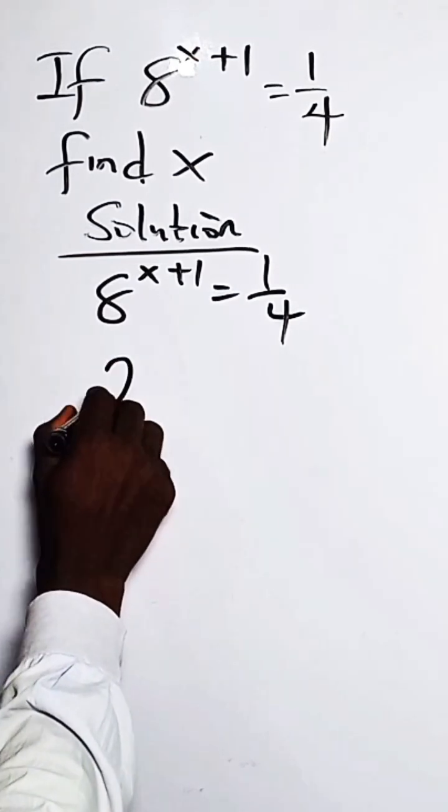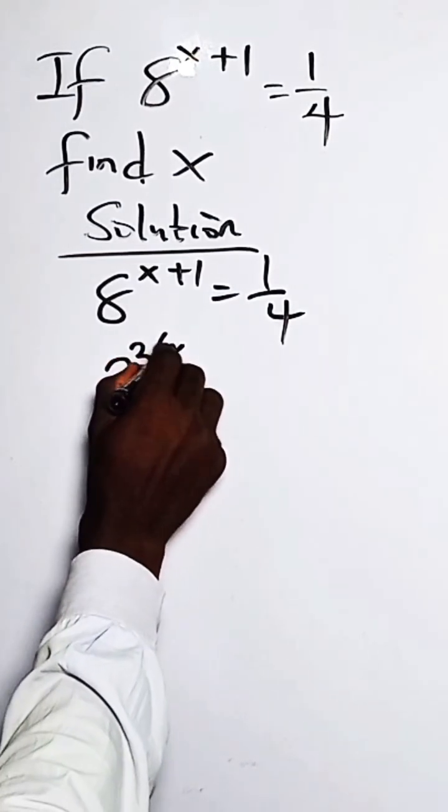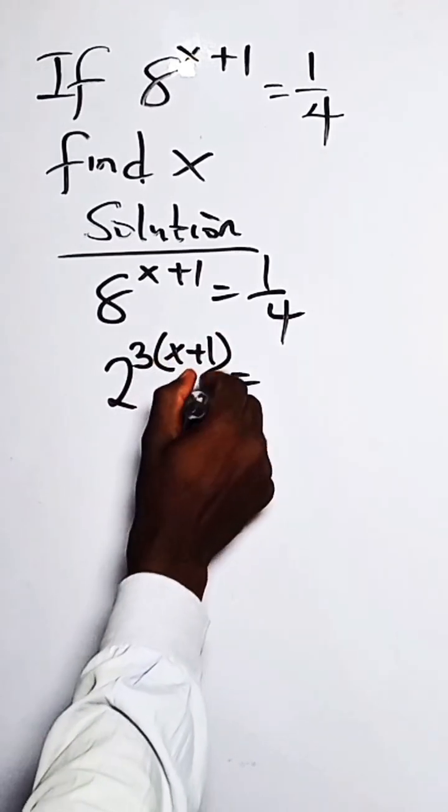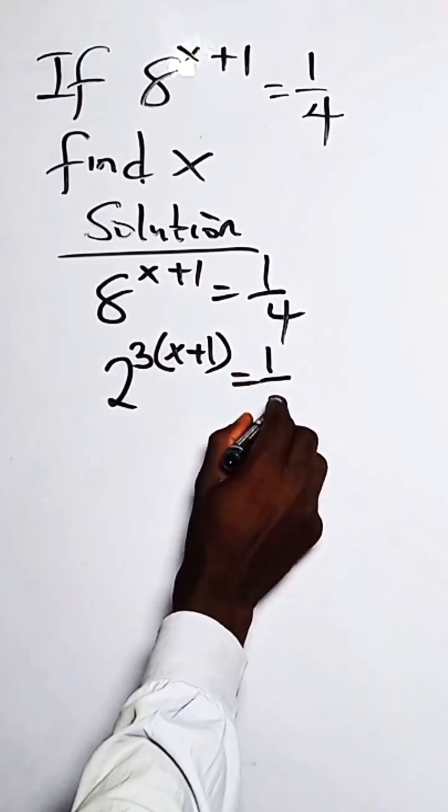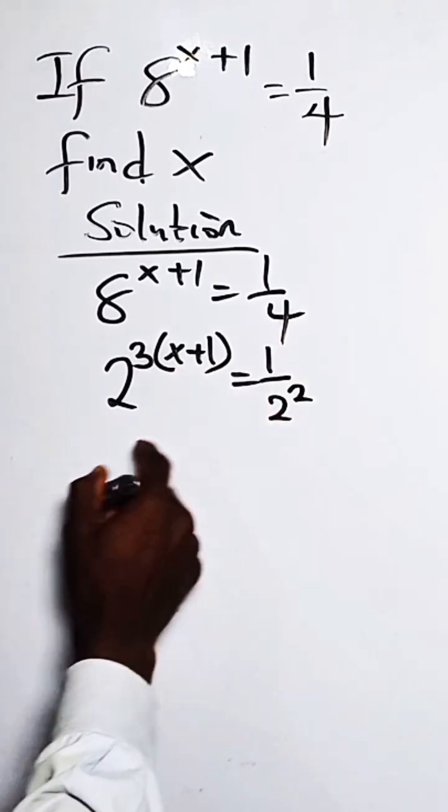We can have it as 2 raised to the power 3 into x plus 1 equals 1 over 4. We have it as 1 over 2 squared, which is 1 over 4.